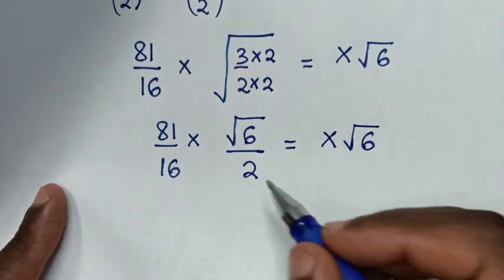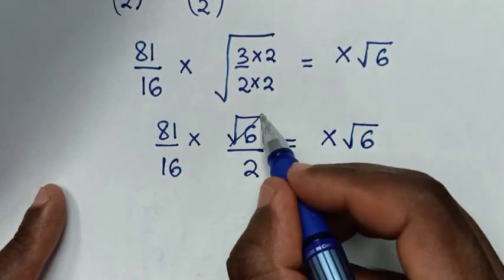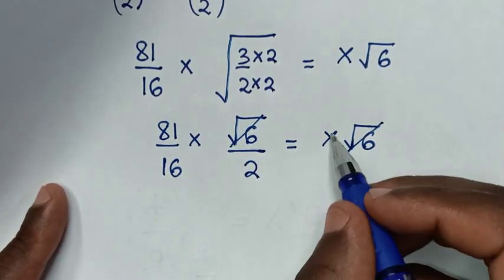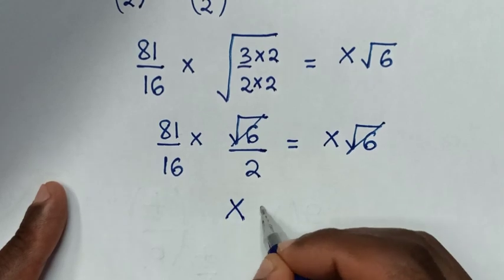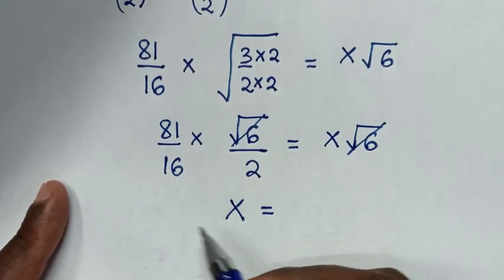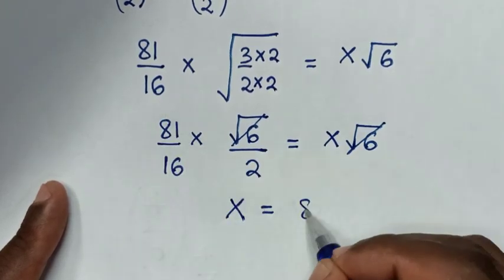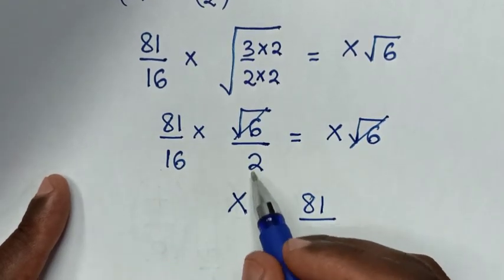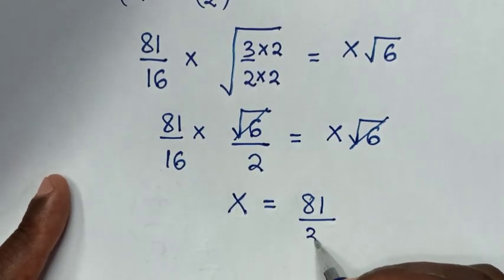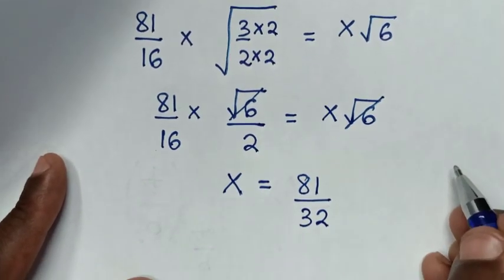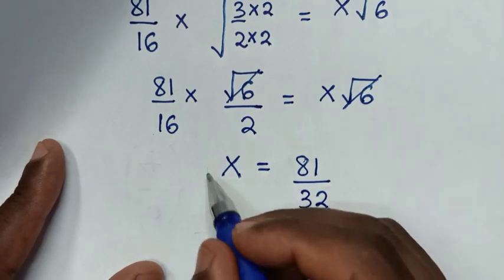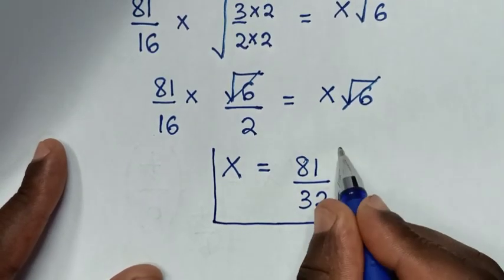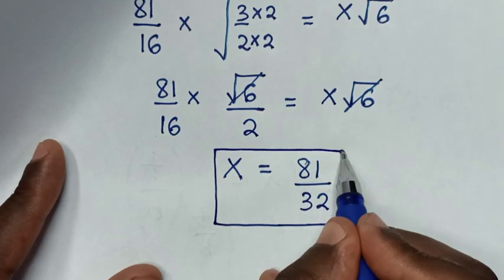Then in the next step, square root of 6 cancels square root of 6 on both sides, so x is equal to 81 over 16 times 2, which is 32. So the final answer for the value of x is 81 over 32.